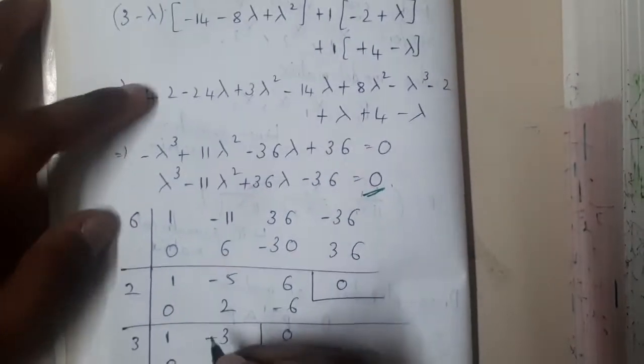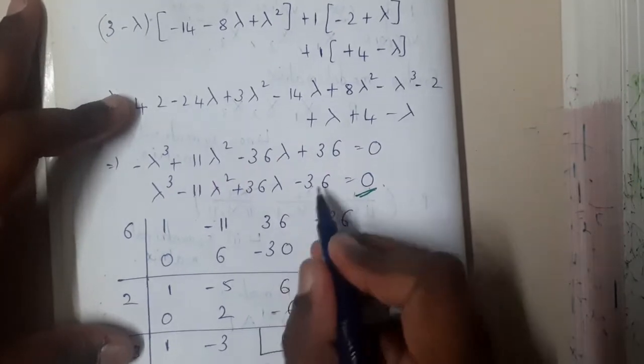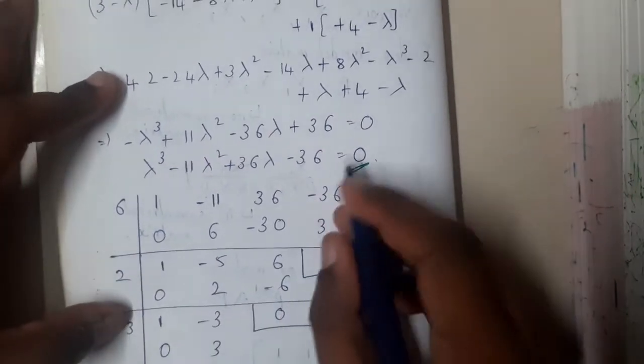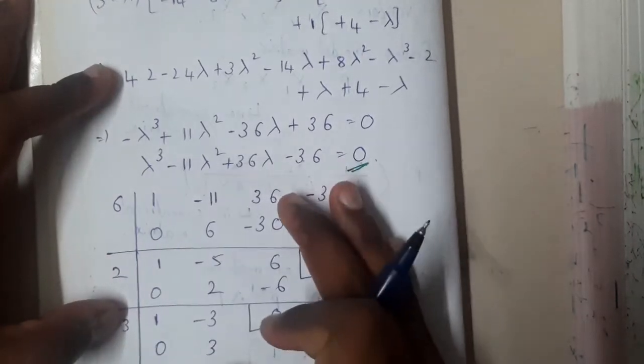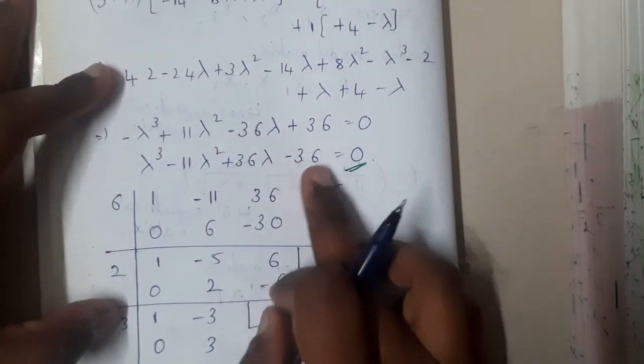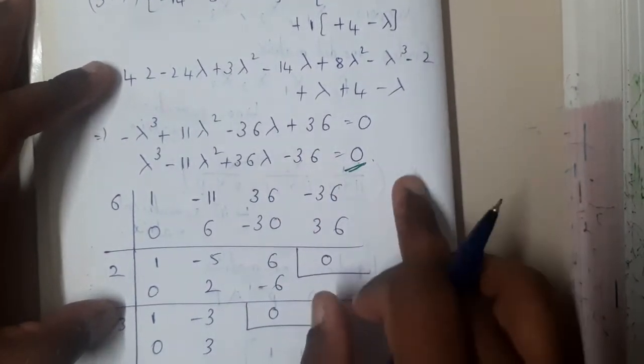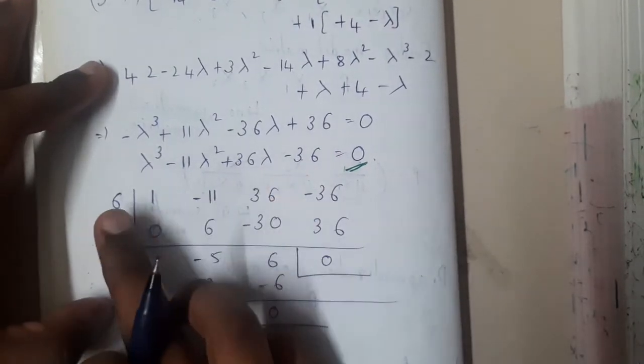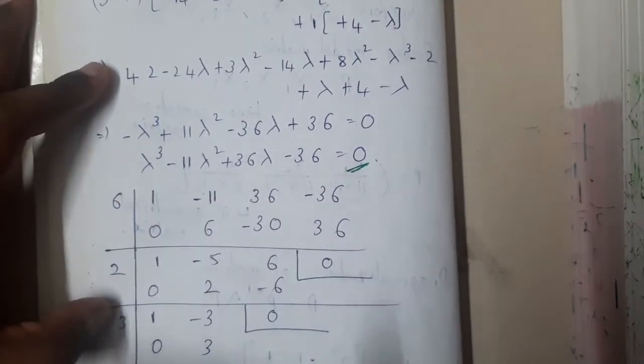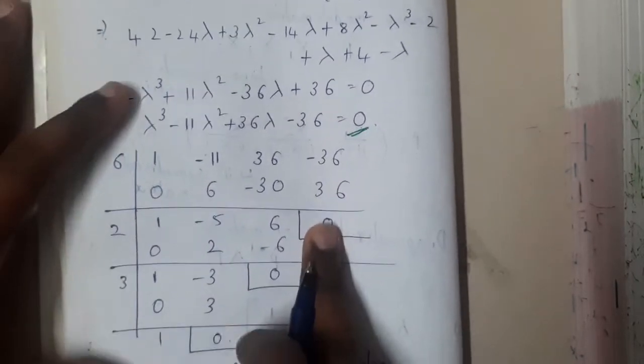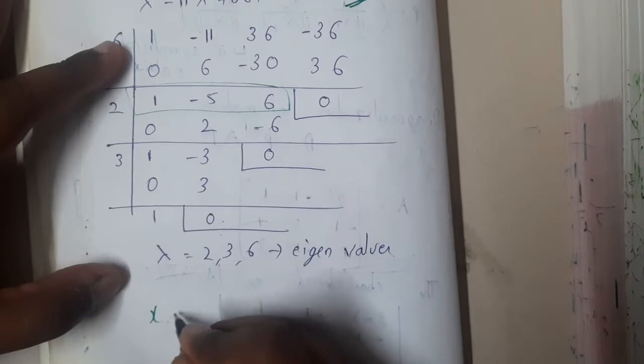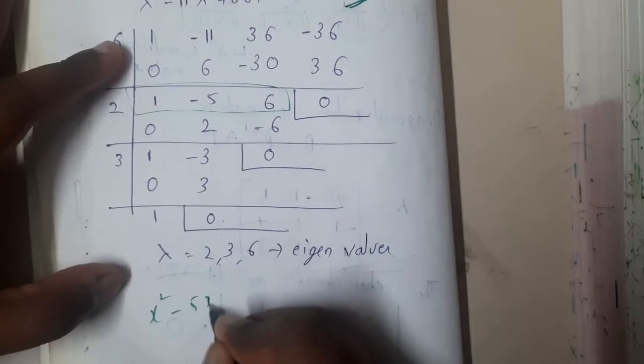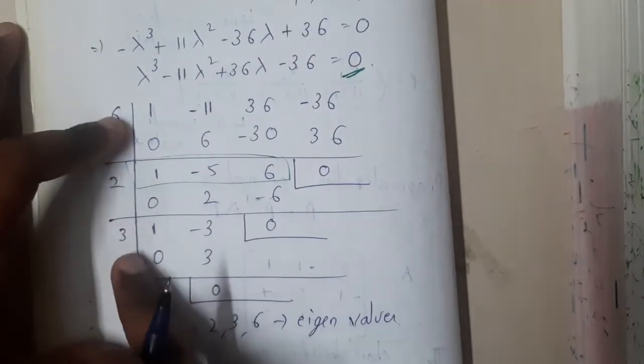Based on that equation you will be finding the eigenvalues. In the previous lecture when we were calculating eigenvalues I gave you a trick to solve this. The last value 36, you take factors. I see 6 into 6, so I took 6. It's just guesswork, so I took 6 and I got 0. From here you can solve it. X squared minus 5X plus 6, so for this you will be getting 3 and 2.